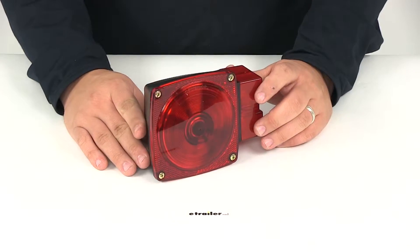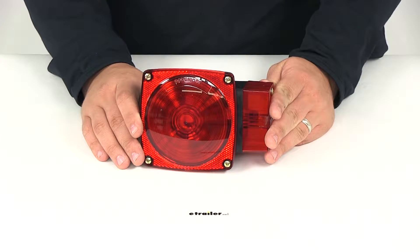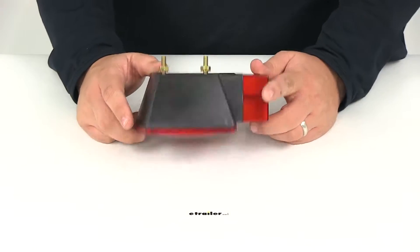The red square light is going to serve seven functions for trailers more than 80 inches wide such as your stop, turn, tail, rear clearance, rear reflex, side marker, and side reflex indicators.